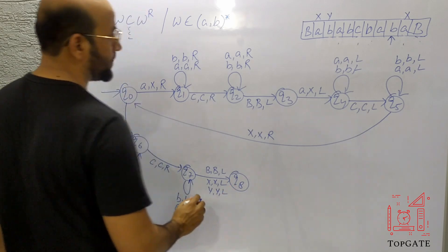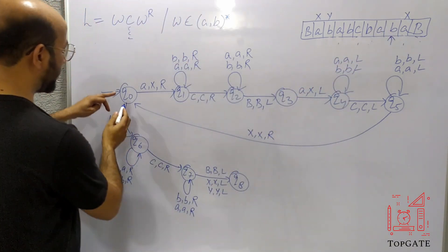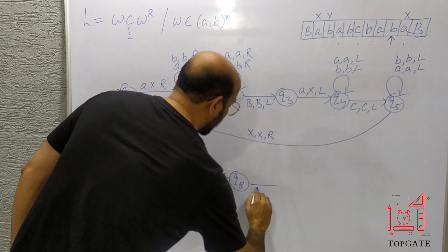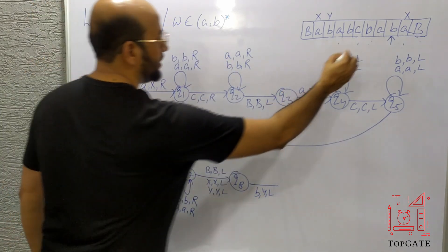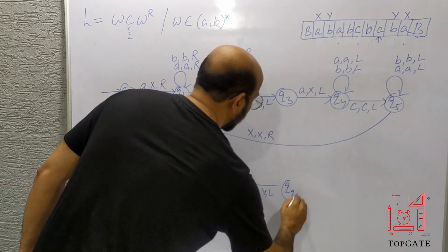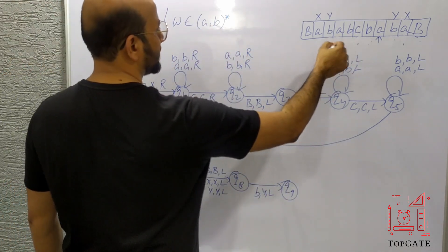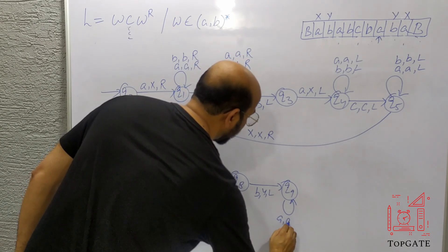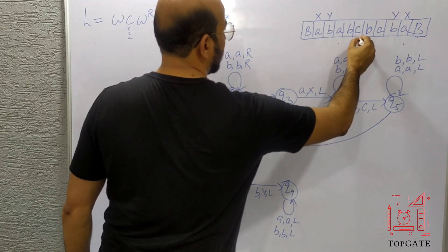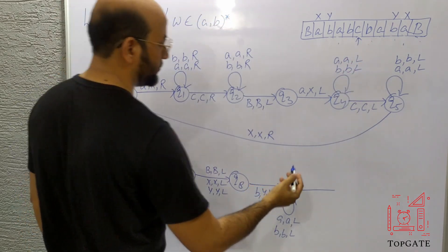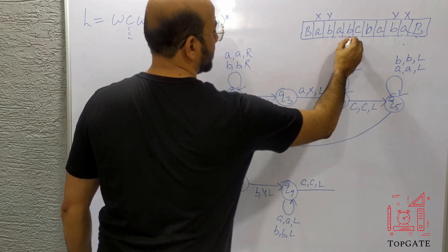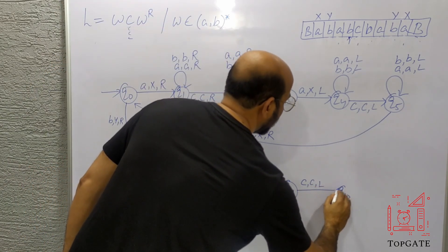At Q8, I change this B to Y and go left. The pointer moves to the element before it and the state goes to Q9. At Q9, skip all A's going left and all B's going left. The pointer comes to C. Take a transition: if you find C let it be C go left. This C is skipped and the pointer points to the element before C, going to state Q10.